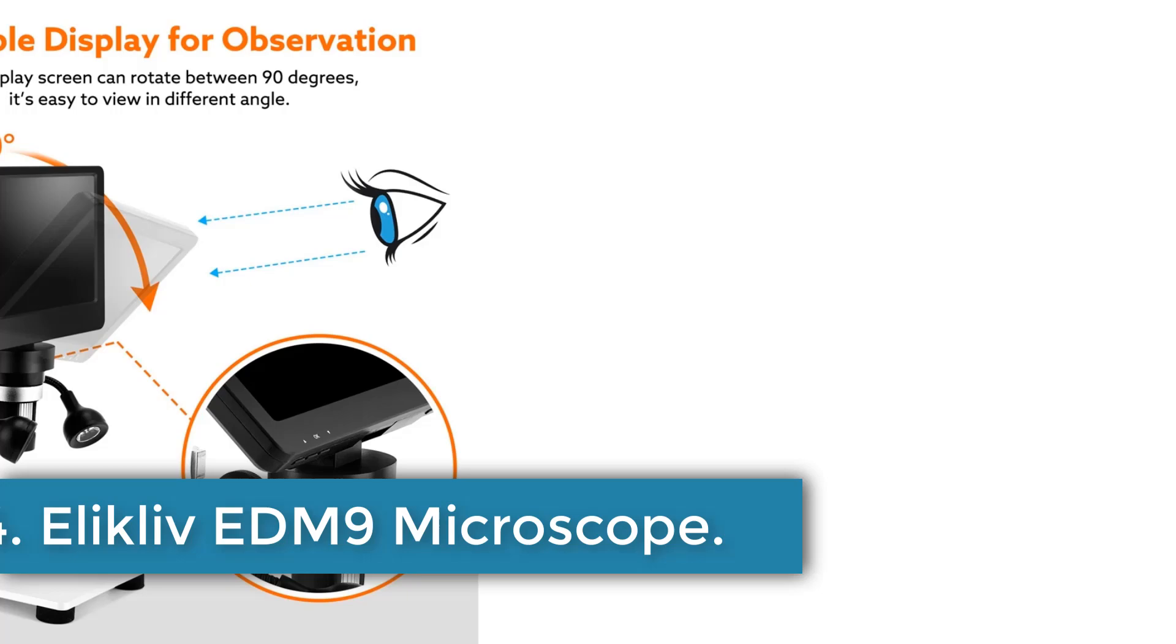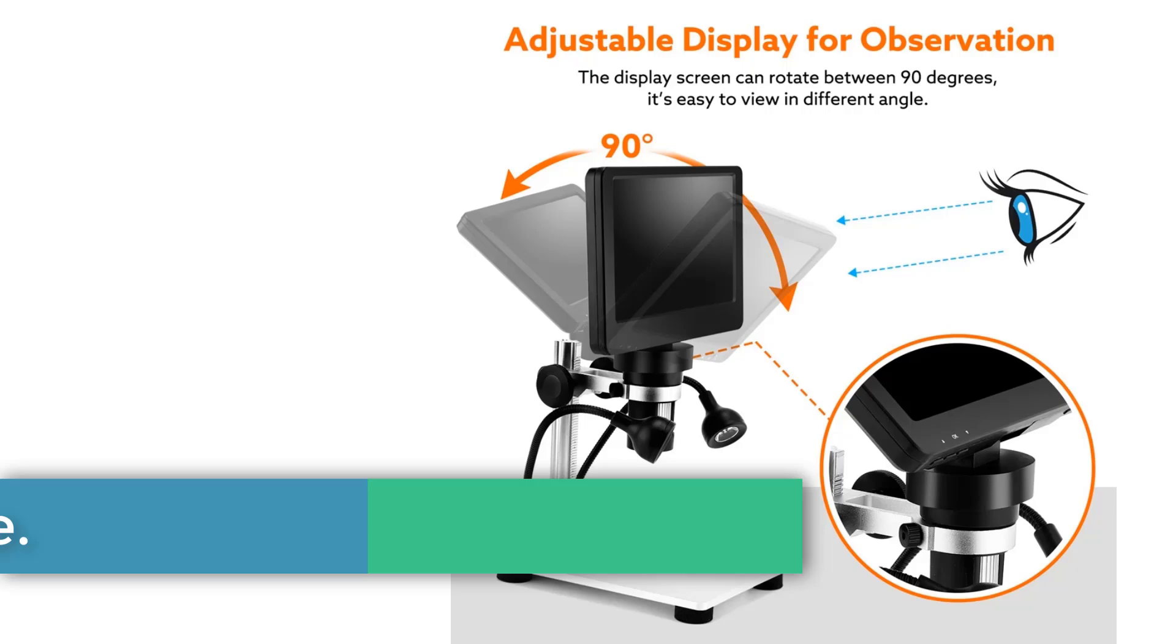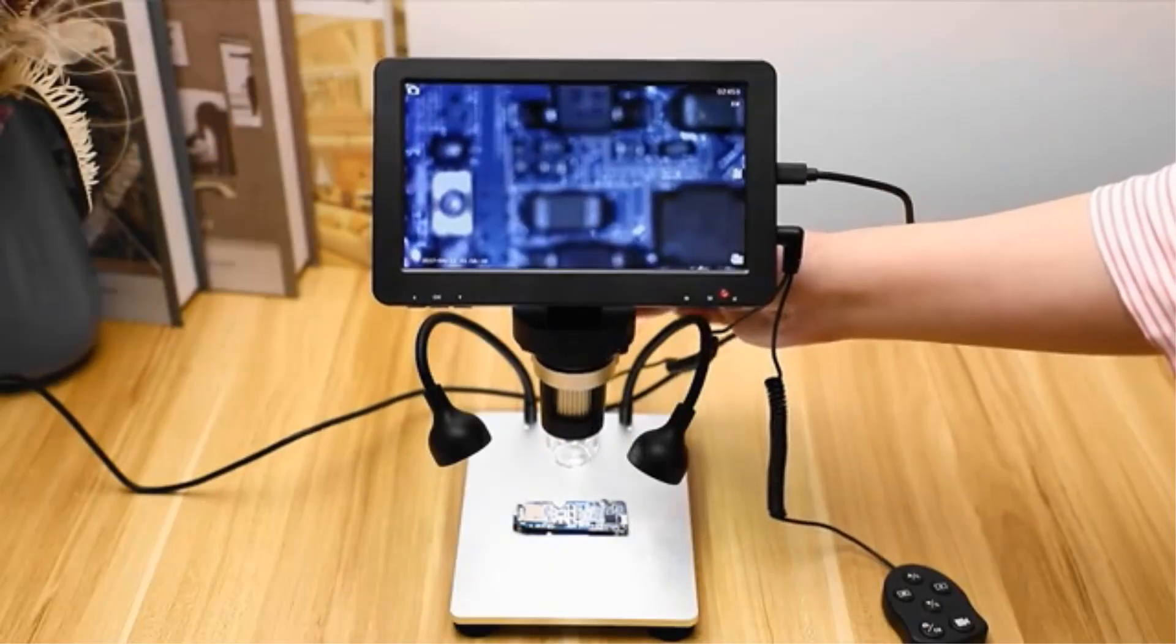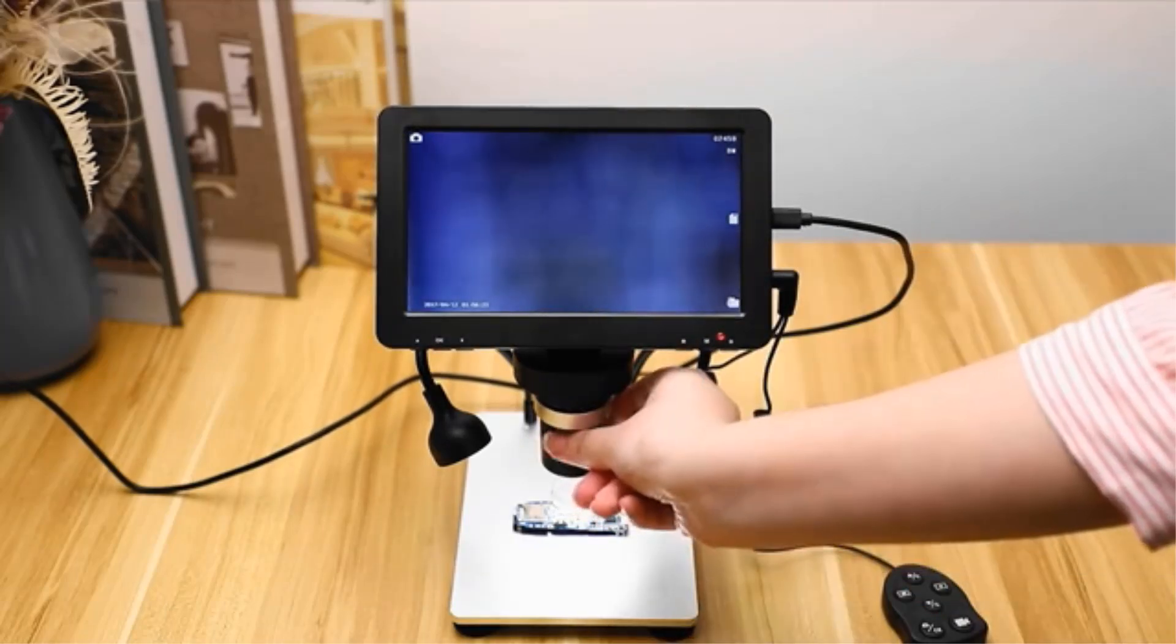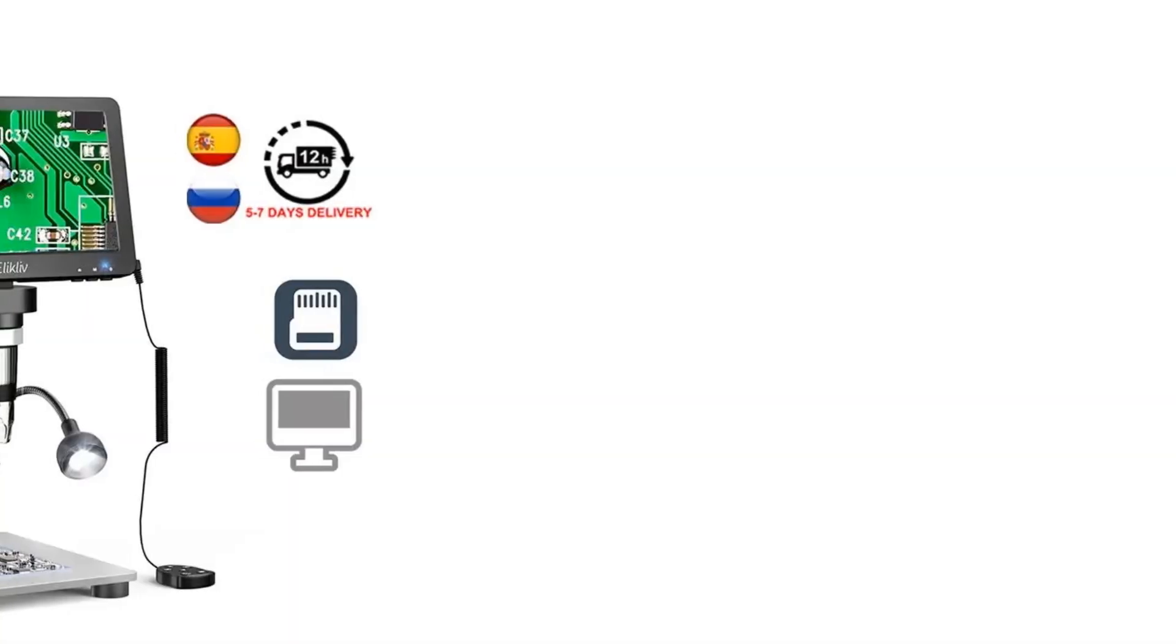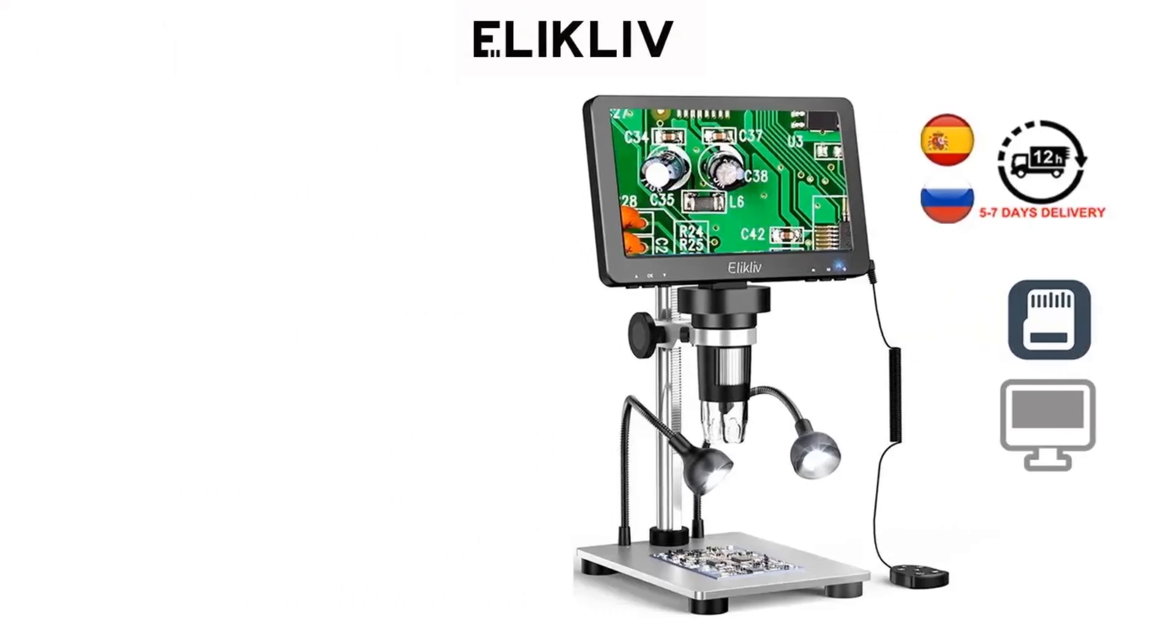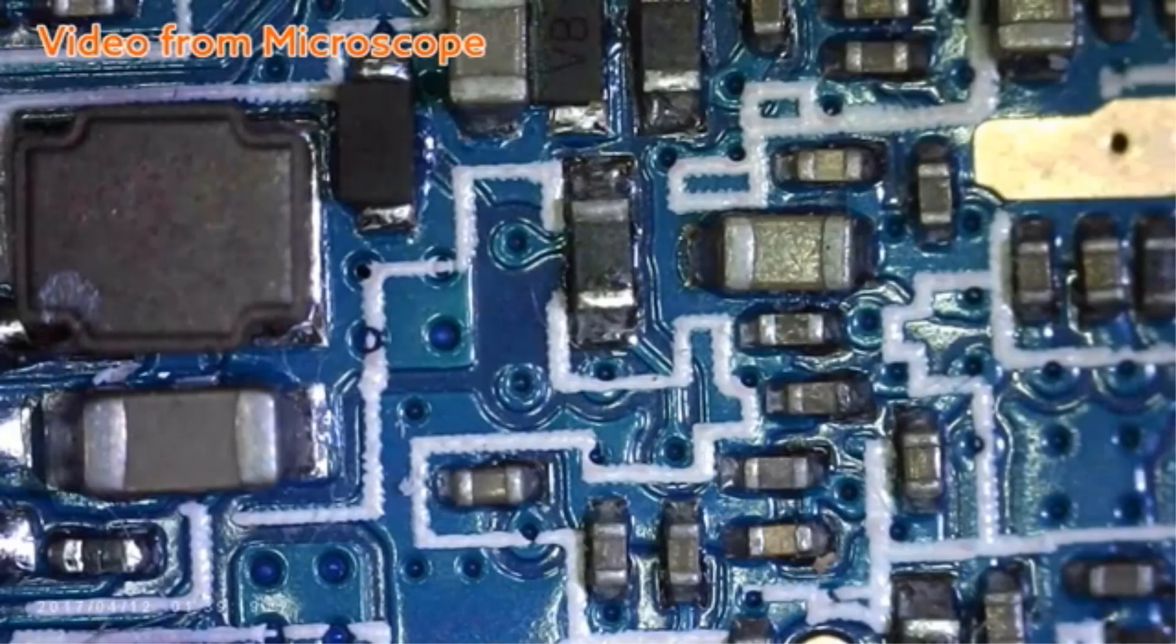Number 4: ELICLIV EDM9 Microscope. The ELICLIV EDM9 Digital Microscope is a versatile and high-quality imaging tool designed for various applications, including electronics, soldering, and coin collection. It features a magnification range of 500x to 1500x, supported by a robust aluminum alloy construction for durability. With a choice of 4.3-inch or 7-inch LCD screens, the microscope provides clear, high-definition visuals at 1080p resolution, although recorded videos are in 720p.